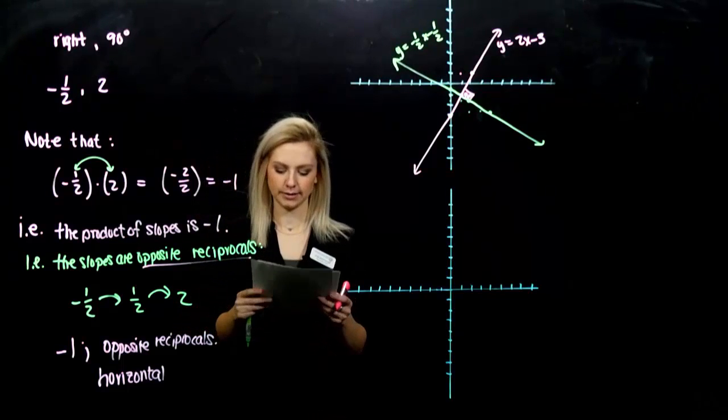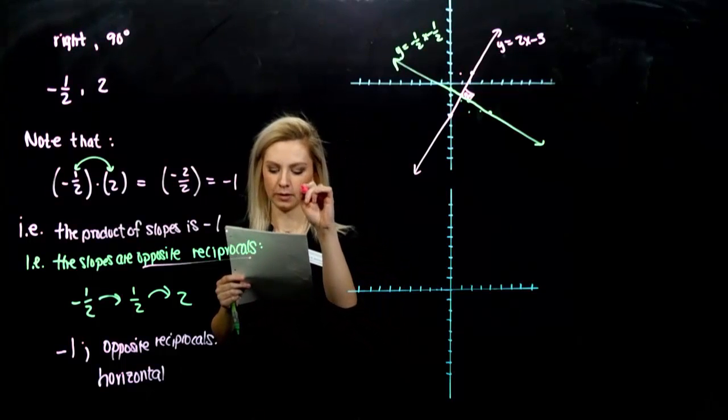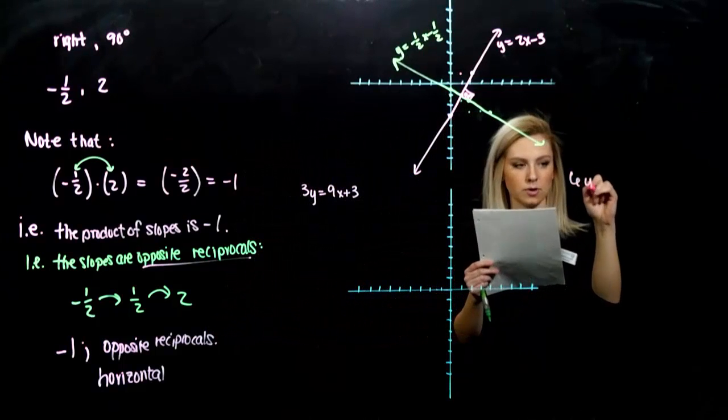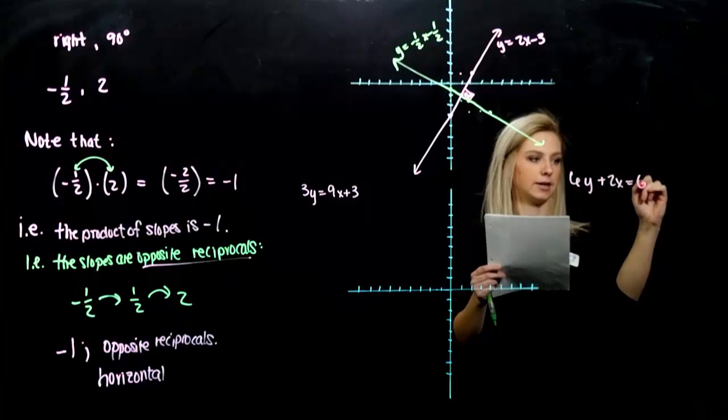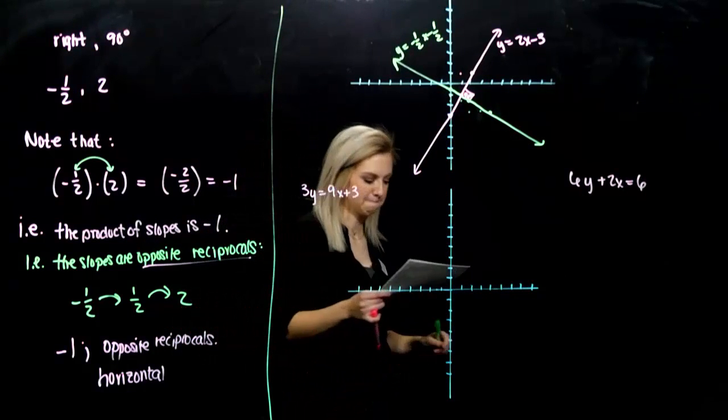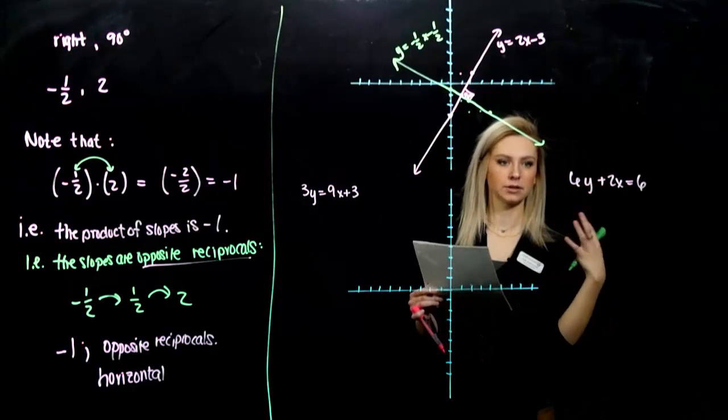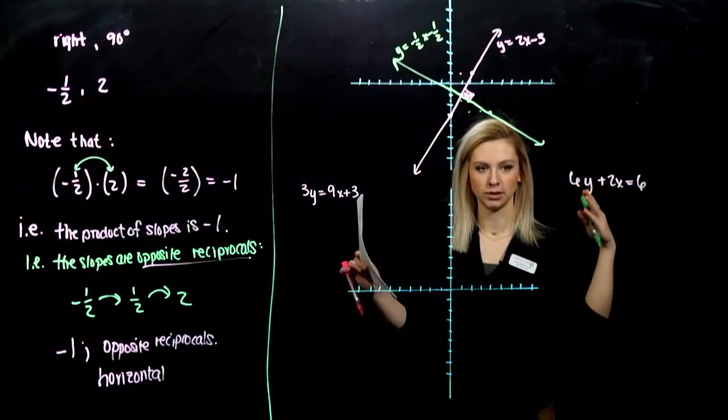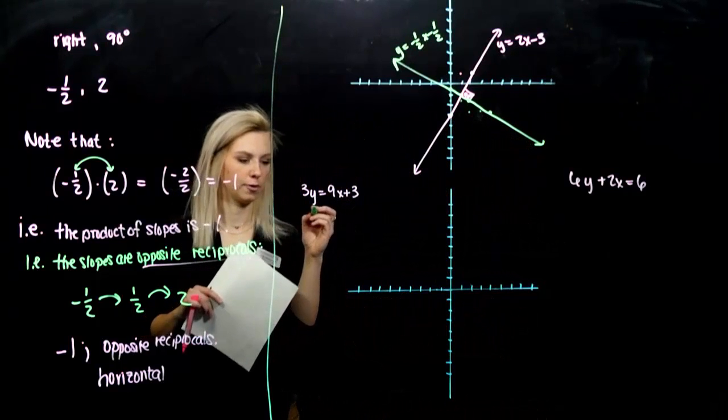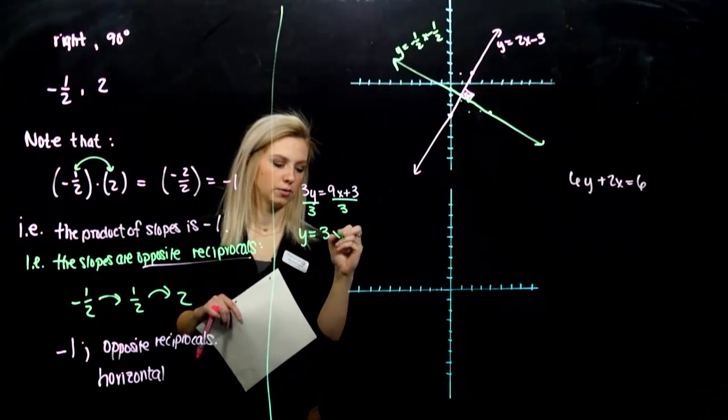So you want to look at a few examples. Determine whether the graphs of the lines 3y equals 9x plus 3, and 6y plus 2x equals 6, if they are perpendicular. So we're going to graph them eventually, but as we're solving for the slope intercept form, it's going to tell us based on the slopes, do we have opposite reciprocals? So let's just solve for the slope intercept form. Over here, I need to divide by 3, so y is 3x plus 1.